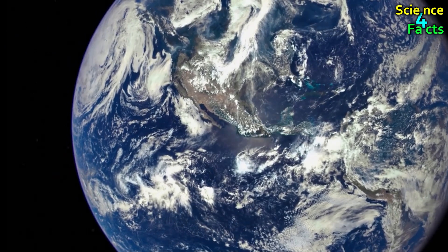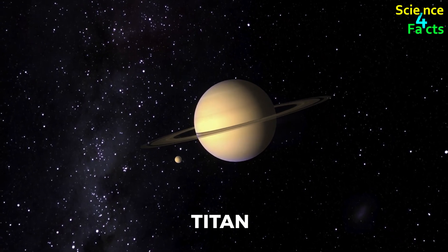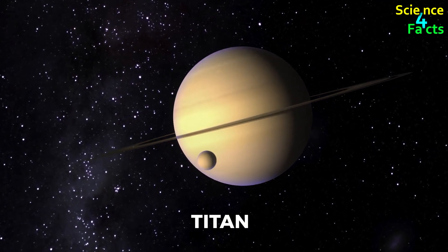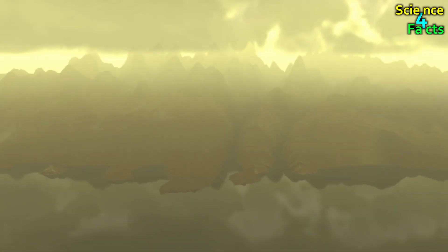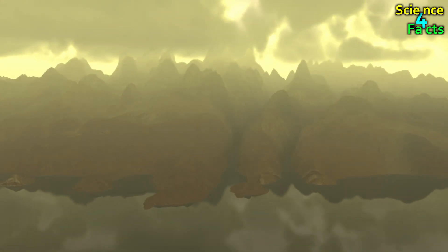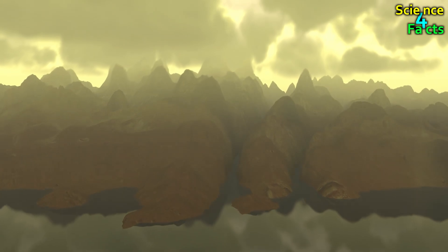Apart from these planets in the solar system, there is rain on one of the satellites. Saturn's largest moon, Titan, has the same rainfall as Earth. Titan is the only moon to have a thick atmosphere. Titan's atmosphere is full of nitrogen and methane.